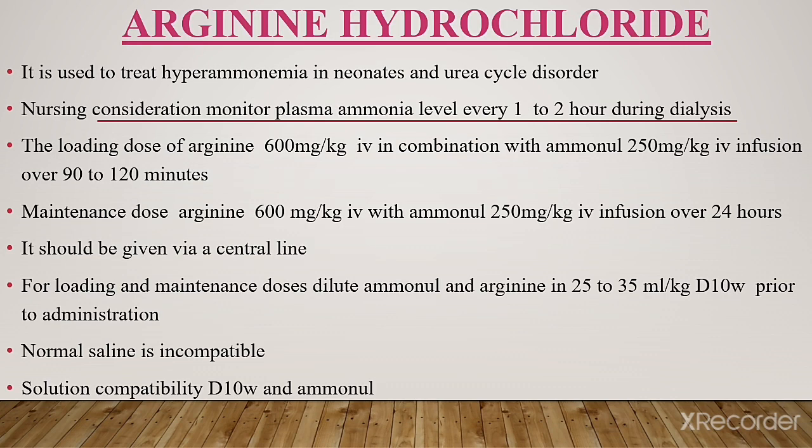The second medication is arginine hydrochloride. It is used to treat hyperammonemia in neonates and urea cycle disorder. Nursing consideration: monitor plasma ammonia level every 1–2 hours during dialysis.